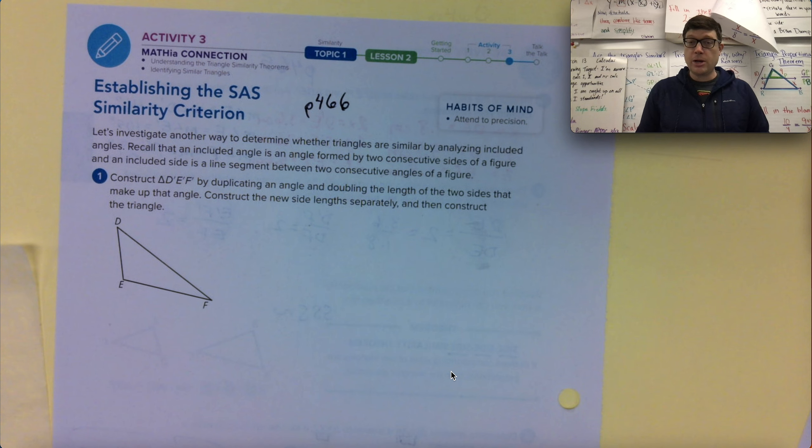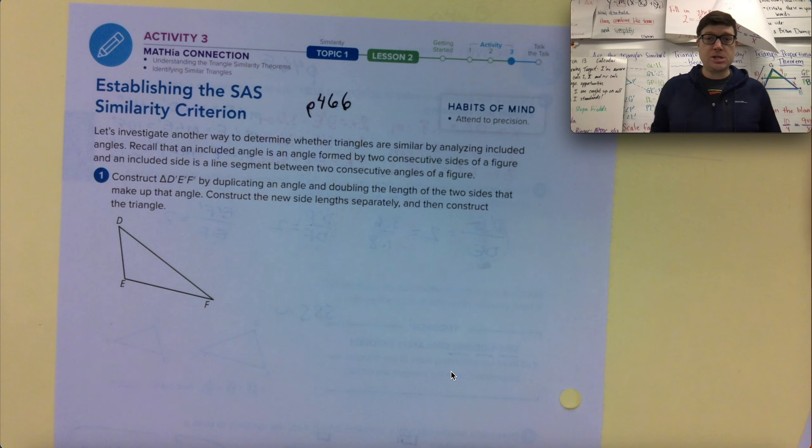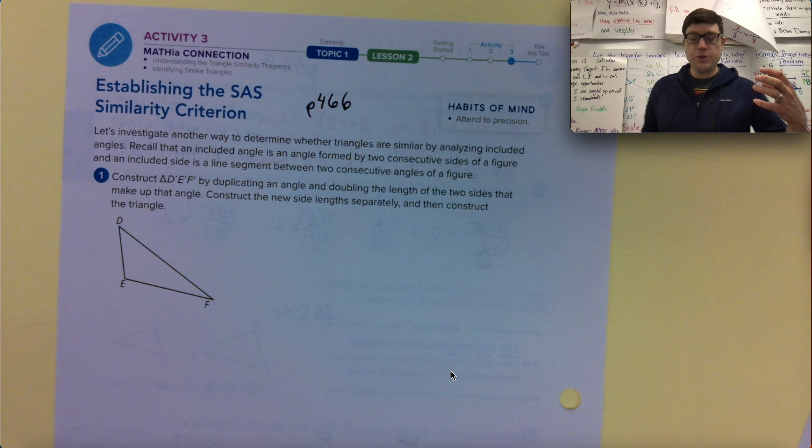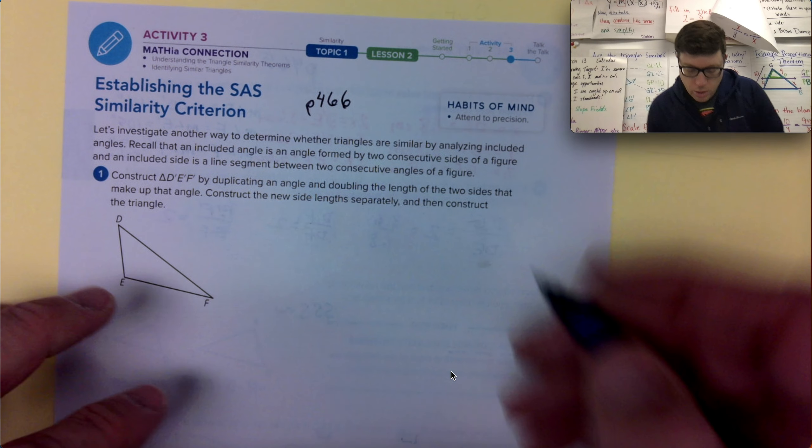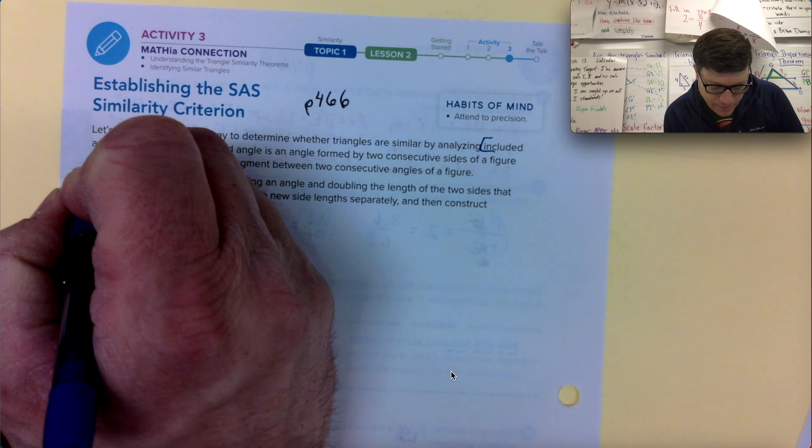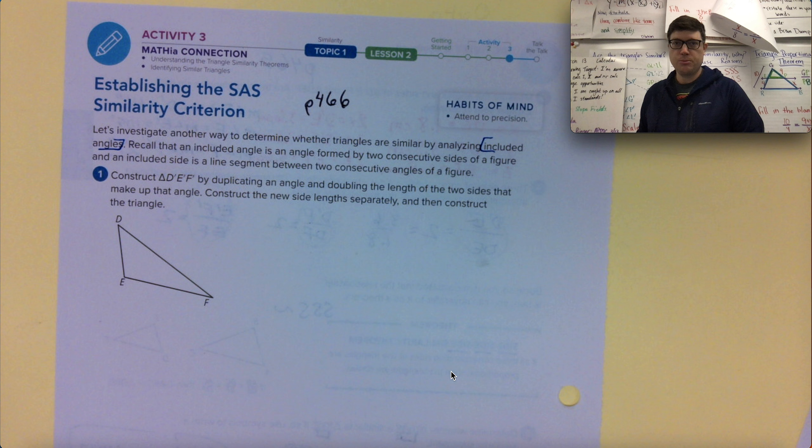Establishing the SAS similarity criterion, we're going to investigate another way to determine whether our triangles are similar. This time we have to use what's called the included angle, and so we'll see that described. We have seen that described in previous modules and so it's coming back into practice now.